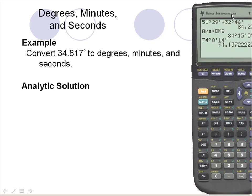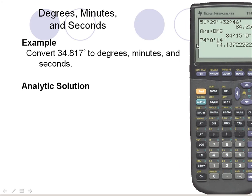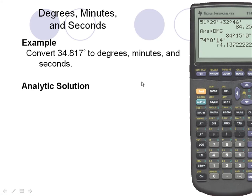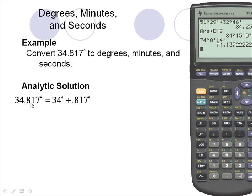Let's convert 34.817 degrees to degrees, minutes, and seconds. Here's the analytic solution. In converting to degrees, minutes, and seconds, we'll simply leave the 34 as our whole degree. In 34.817, the 34 is our whole number.